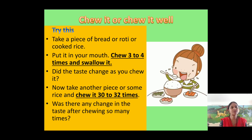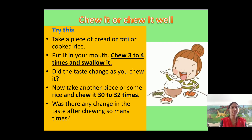What was the difference? The first time you chewed the food 3 to 4 times, and the next time you chewed it 30 to 32 times. You have to identify the difference between the two tastes — whether the taste changed in the first activity and in the second. Note down your observations and write them in the comment box. Isn't it an interesting activity? Everybody is going to do it carefully.